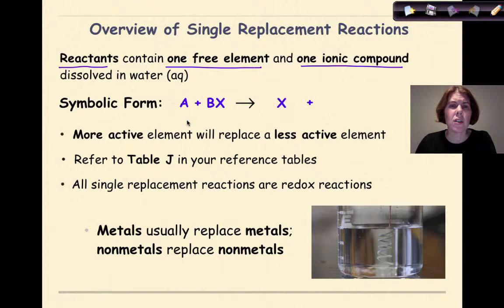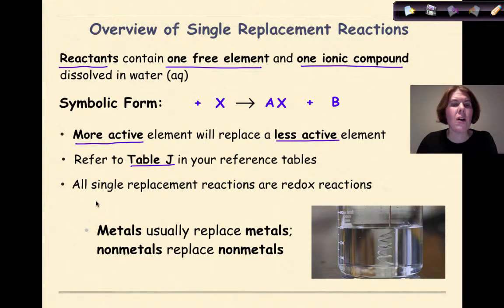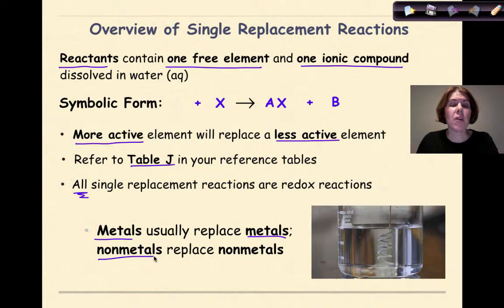When a single replacement reaction occurs, A is going to basically replace the B, and the B will be kicked out by itself. The more active element will replace a less active element. We're going to refer to Table J in your reference tables to see how to figure this out, and all single replacement reactions are redox reactions. Metals will usually replace metals, and nonmetals will replace nonmetals.